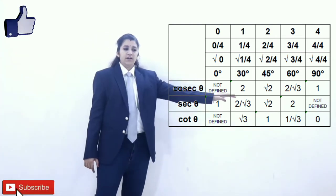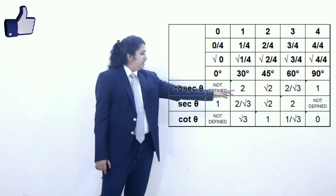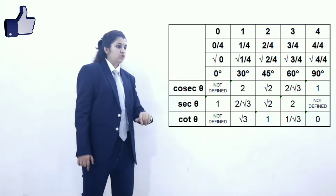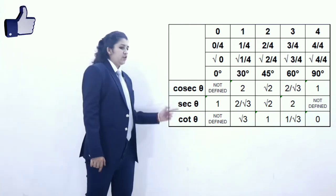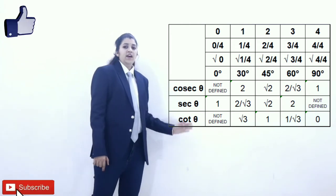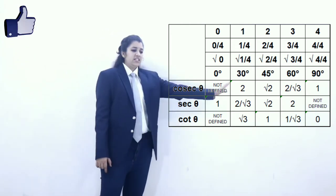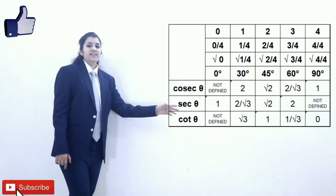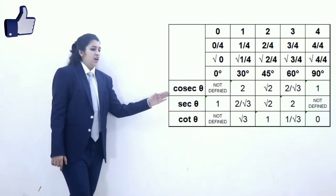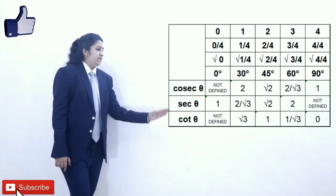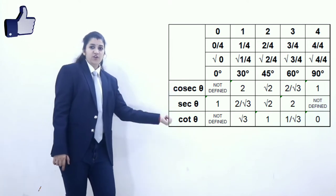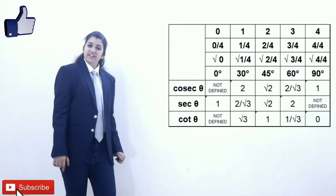Tan 90 degrees is actually not defined, so cot 0 is not defined. Tan 60 degrees is root 3, so cot 30 degrees is root 3. Tan 45 degrees is 1, so cot 45 degrees is again 1.